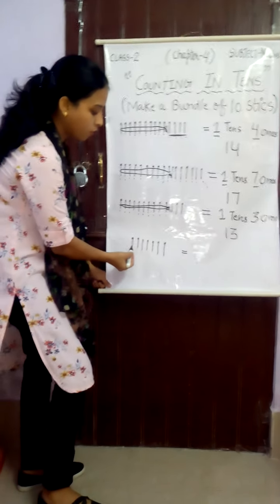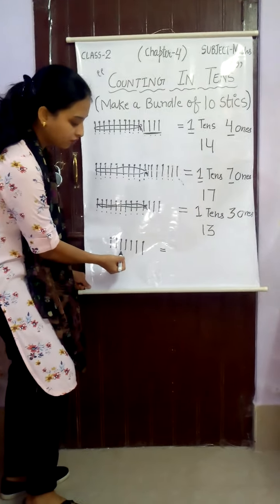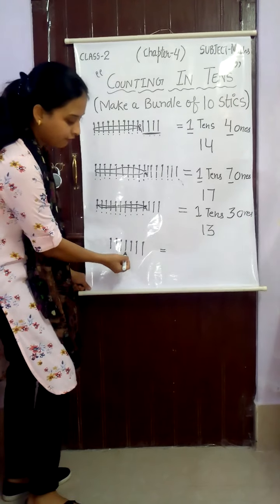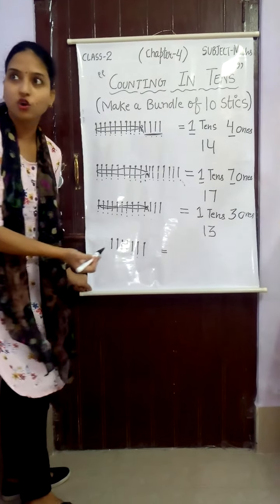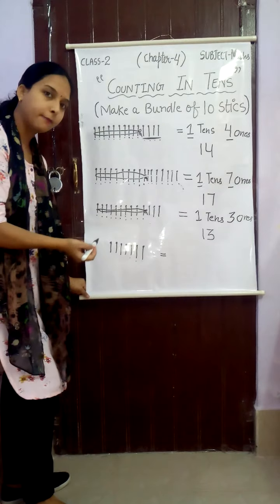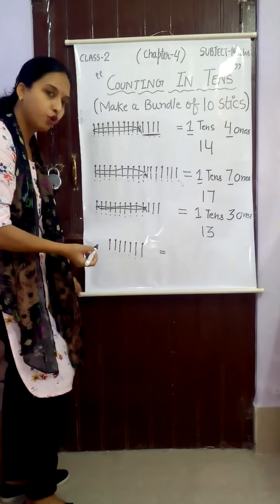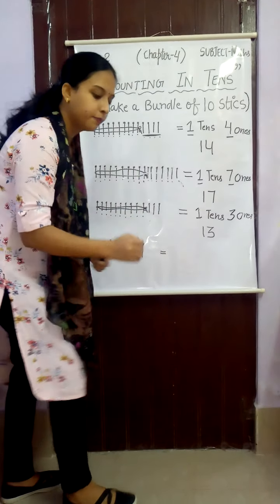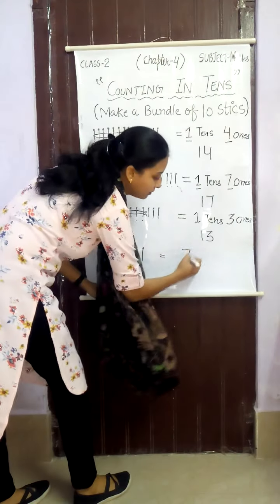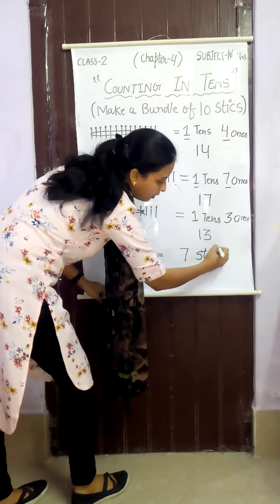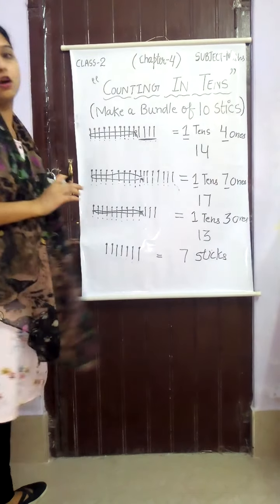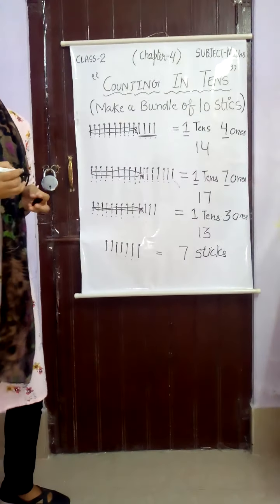The last one: 1, 2, 3, 4, 5, 6, 7. Can we make a bundle of ten sticks here? No — here there are only seven sticks, so we cannot make a bundle of ten sticks.